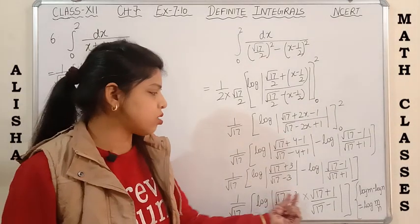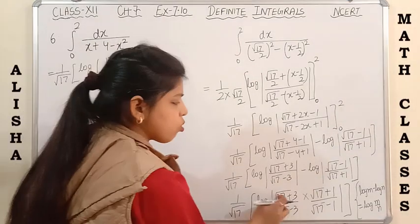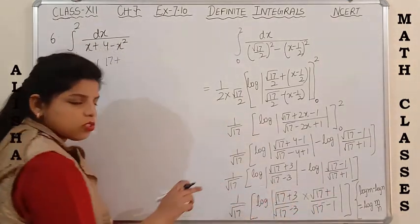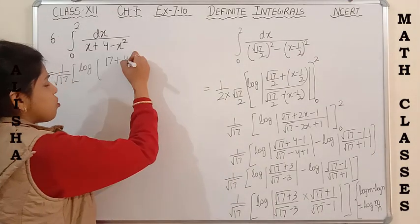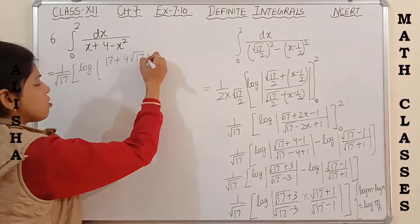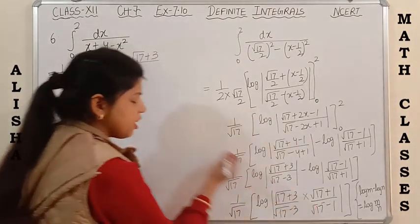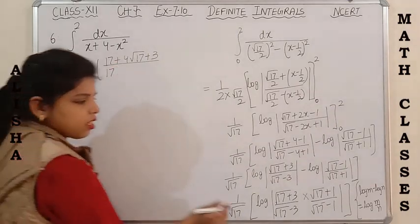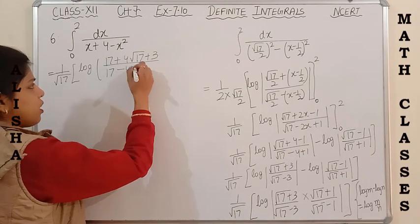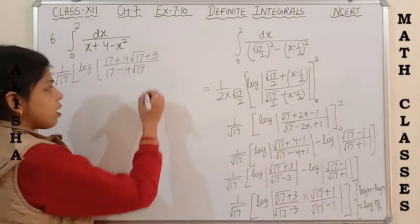Now further simplifying by multiplying: √17 × √17 = 17, √17 × 1 = √17, and 3 × √17 = 3√17, giving 4√17, and 3 × 1 = 3. In the denominator: √17 × √17 = 17, minus √17, minus 3√17 gives minus 4√17, and -3 × -1 = +3.